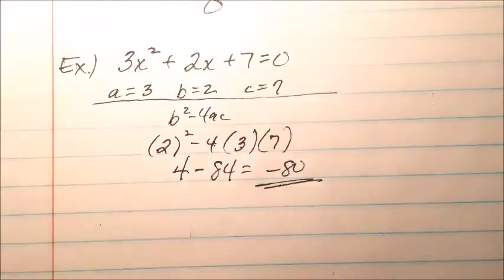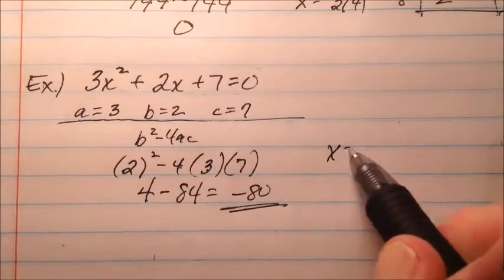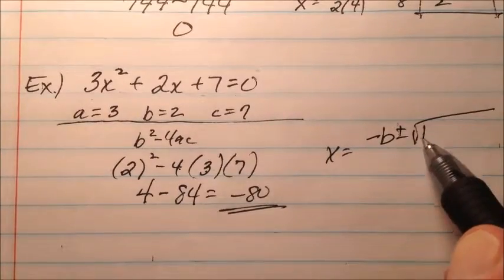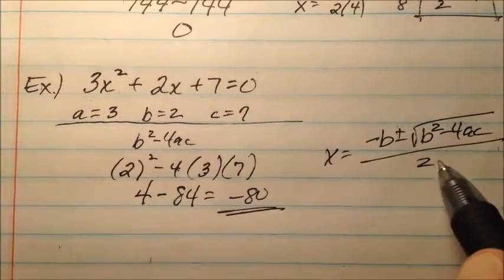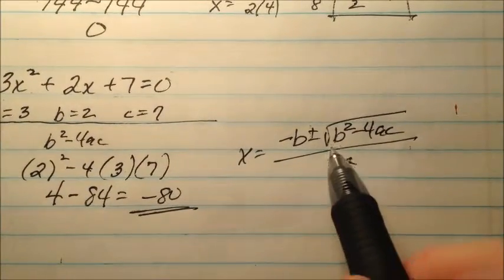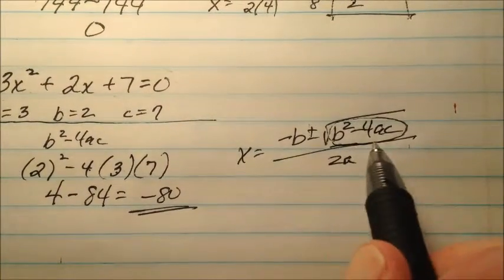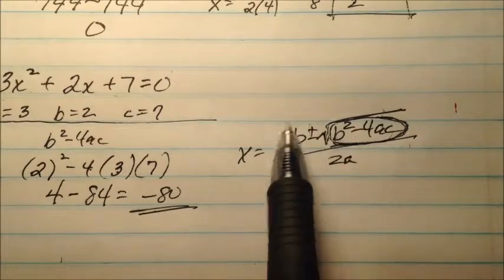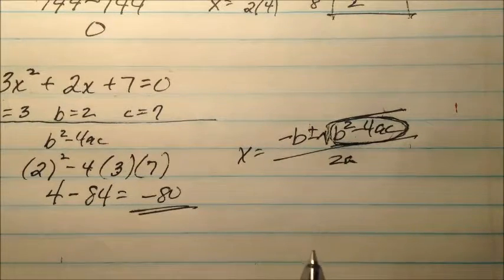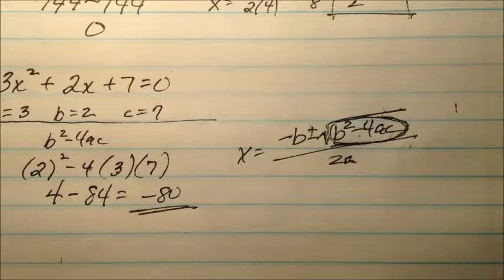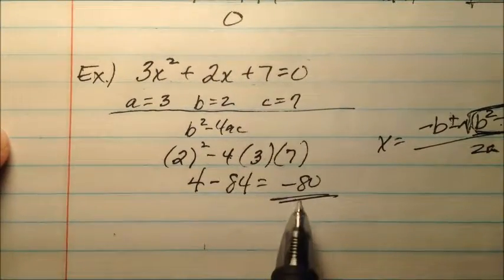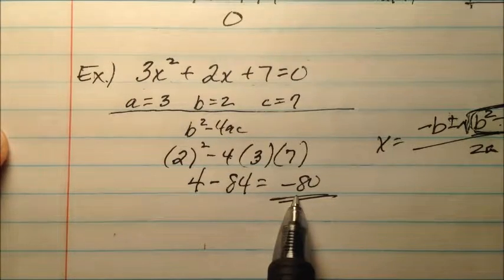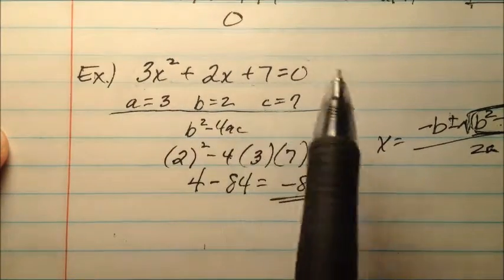Thinking about this logically: in the quadratic formula, the discriminant sits underneath the radical. If it's negative, we get an imaginary number there, and combined with the real parts it produces complex solutions — one with a plus imaginary component and one with a minus imaginary component. This video is about understanding the discriminant, so we know that because the discriminant is negative 80, you'll have two complex roots.